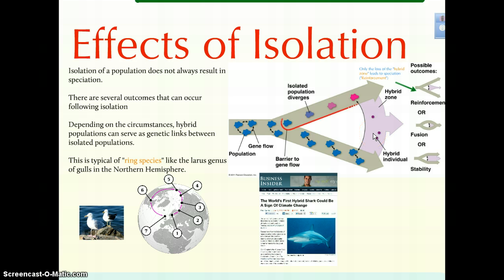Sometimes hybrid species can do particularly well — given plants, plants handle hybridization quite well. But some organisms don't do particularly well. That said, one of three scenarios can occur if these hybrid zones come into play.